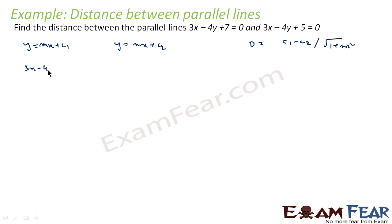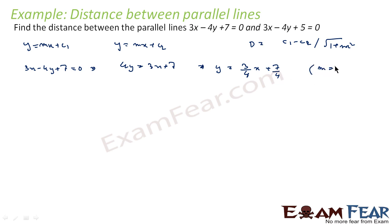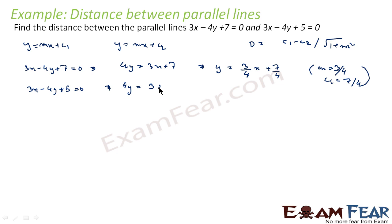The first equation is 3x − 4y + 7 = 0, or 4y = 3x + 7, or y = (3/4)x + 7/4. So m = 3/4 and c1 = 7/4. The second equation is 3x − 4y + 5 = 0, which gives 4y = 3x + 5, or y = (3/4)x + 5/4. Here also m = 3/4 and c2 = 5/4.